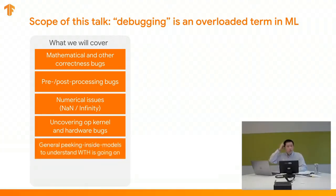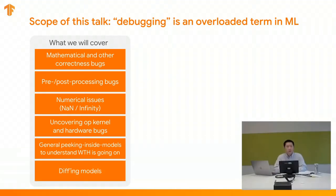The tools and techniques we'll cover will also be useful if you want to peek into your model to understand what's going on — for example, answering questions like why is my model making a wrong prediction on a certain input. You'll be able to look at layer activations and intermediate tensors. One related use case is porting a model from one version of a library to another, or from one library to another — like TensorFlow to TF Lite, TensorFlow to TFJS, TensorFlow to PyTorch, or PyTorch to TensorFlow — where you often see divergence between two implementations and want to quickly identify the root cause.